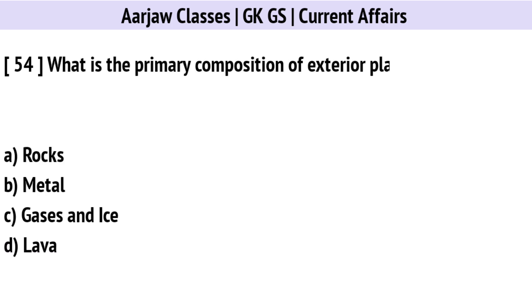What is the primary composition of exterior planets? The right option is C: Gases and ice.